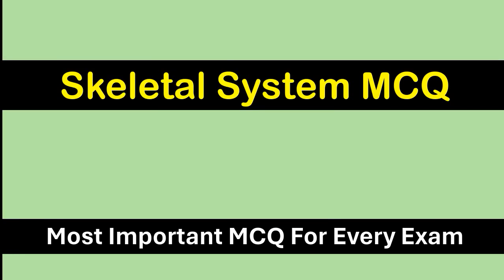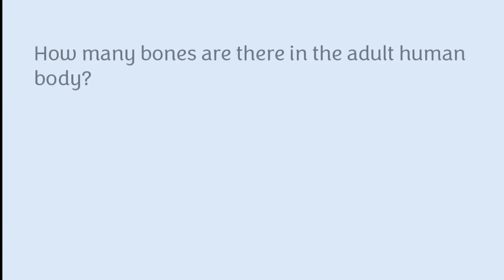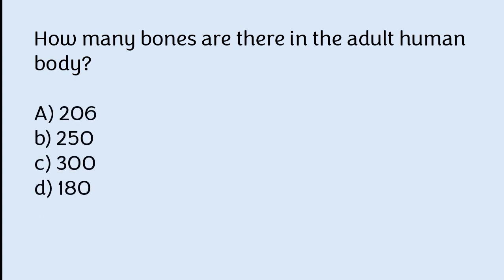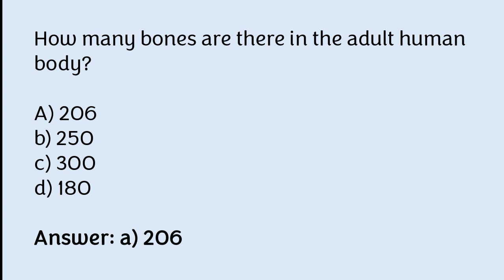Welcome to our channel MCQ1. In today's topic we will cover skeletal system MCQs. How many bones are there in the adult human body? Options: 206, 250, 300, 180. The correct answer is option A — there are 206 bones in the adult human body.